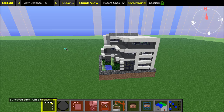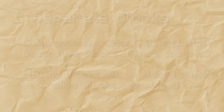The way this tool works is as follows. First of all, it takes all of the blocks in the schematic and divides them into two groups: building blocks and fancy blocks. Their block type decides which of those groups they fit in. Blocks like glowstone, fences, and ice are fancy blocks, while blocks like wooden planks, quartz, and stone are building blocks.